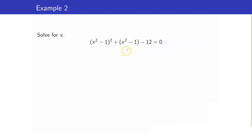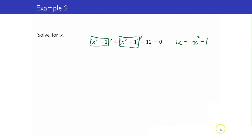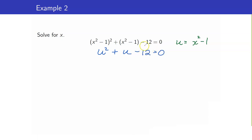Another example. Something is repeating: x² - 1. The exponent here is 2 and the other is 1 — this is in quadratic form. So we let u = x² - 1. This gives us u² + u - 12 = 0.